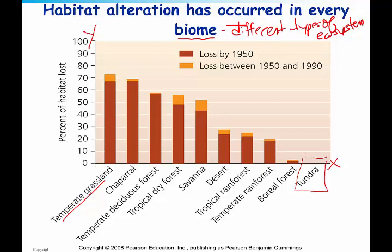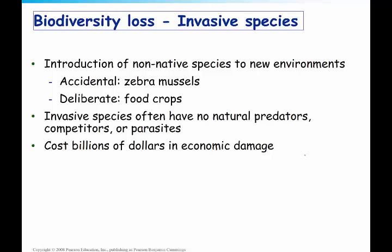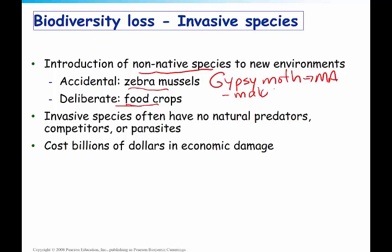Another cause of biodiversity loss is invasive species — the introduction of non-native species to new environments. Sometimes it's accidental, such as the zebra mussels, which were brought over accidentally within the bottom parts of ships. Sometimes it's deliberate; we bring over food crops that are not native. Usually, invasive species are able to spread so much because they have no natural predators, competitors, or parasites. They end up costing billions of dollars in economic damage, and they also decrease biodiversity.